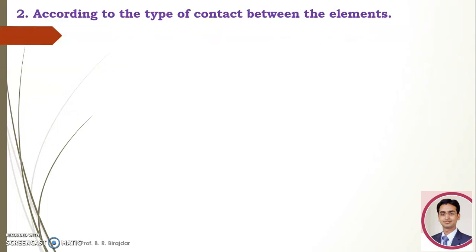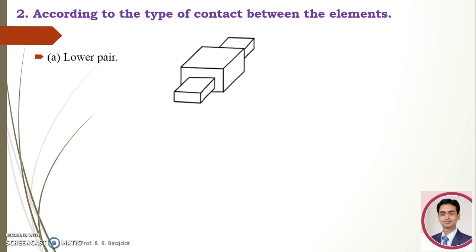Second classification is according to the contact between the elements. First is the lower pair. When the two elements of a pair have surface contact when relative motion takes place, and the surface of one element slides over the surface of the other, the pair is known as a lower pair. An example is a square shaft and square hole — the surface of the shaft is in full contact with the surface of the hole.